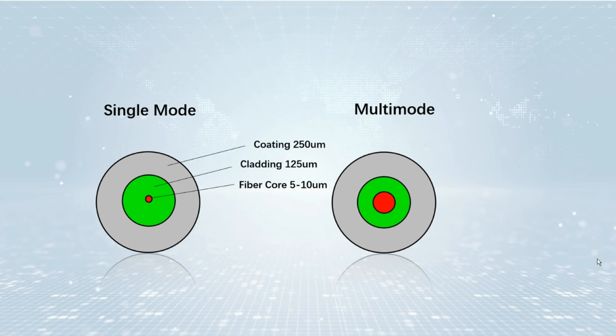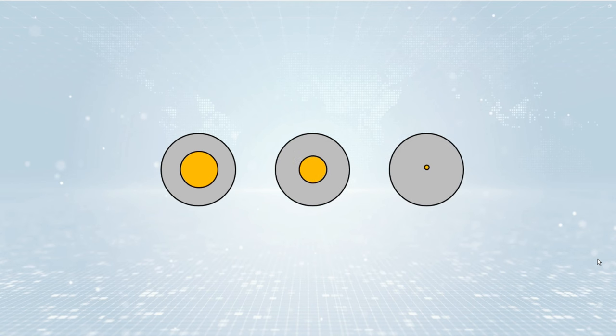Multi-mode fiber core diameter is 50 micrometers and 62.5 micrometers typically, and it works at the 850 nanometers and 1300 nanometers wavelength. The cladding diameter of single-mode and multi-mode fiber is 125 micrometers.